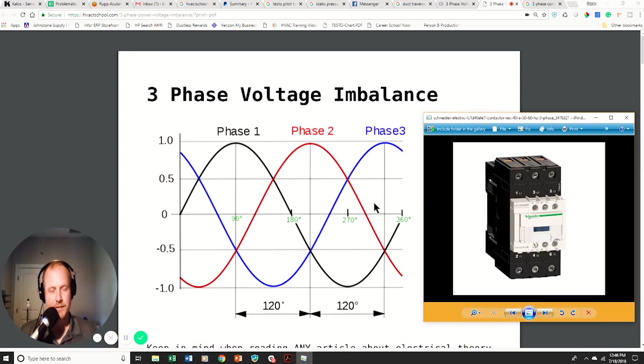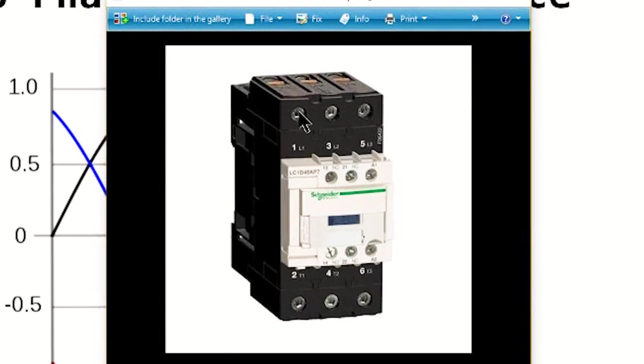From a practical standpoint though, what am I going to do in the field when I want to measure three-phase voltage imbalance? I don't know if you can see my cursor here, so I'm going to point here. I take my contactor and I would measure between each leg, L1, L2, and L3.